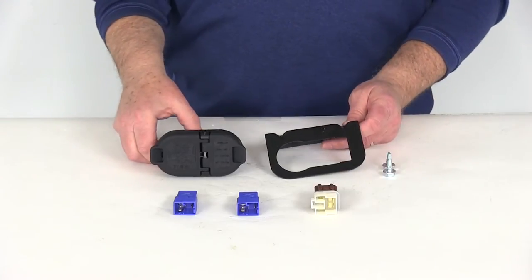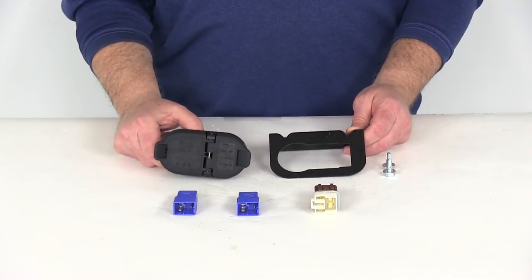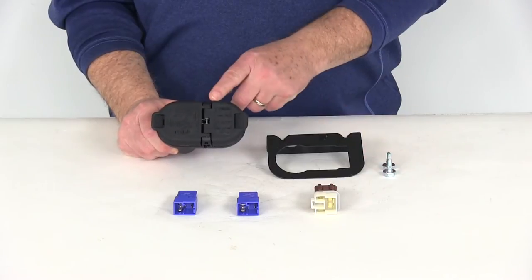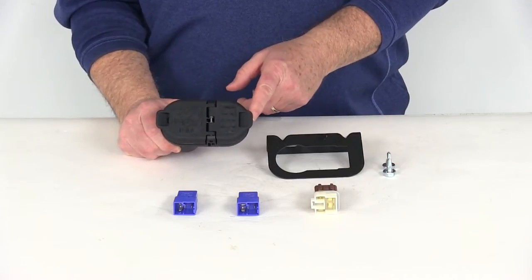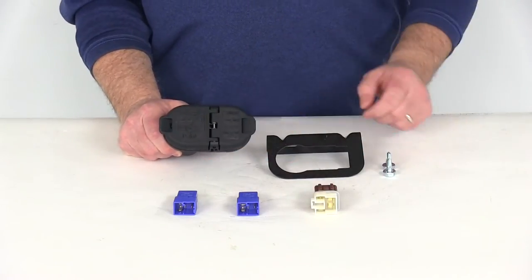Today we're going to review part number N-40975. This is the Hopkins factory style 7-way and 4-way flat vehicle and trailer connector with the included relays.